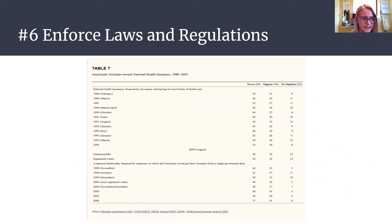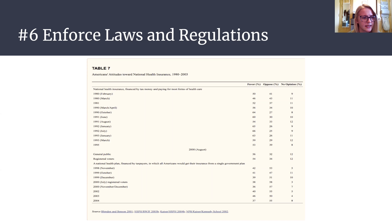The sixth essential service is to enforce laws and regulations. By enforcing laws and regulations, the safety of a community is ensured and their health is protected. When your zip code has the potential to be a better indicator of your health than your genetic code, laws and regulations are necessary to surpass such social determinants of health and give people the access to health services they need to live long, healthy lives.